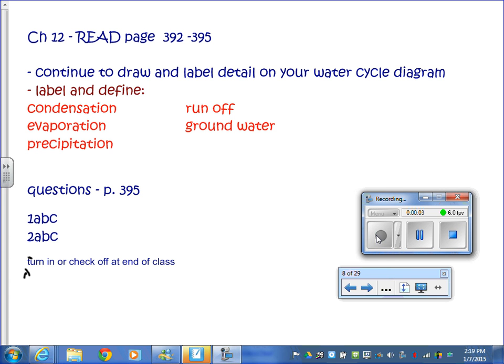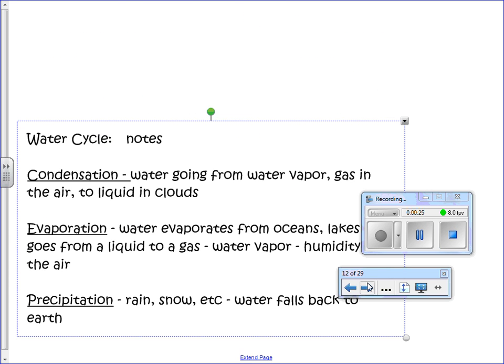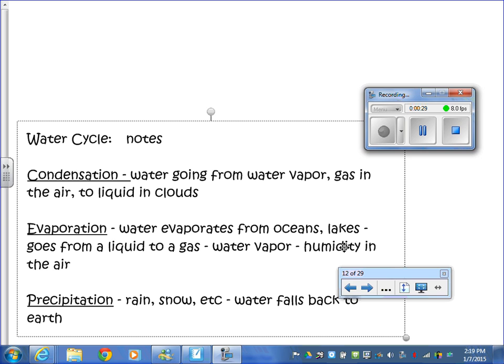This week we are doing chapter 12 on the water cycle and other water resources. The water cycle of course is review from elementary school, so just spend a short time on it, but it does lead us into other things about freshwater resources that we need. So yesterday you should have labeled and defined these things on your water cycle picture. So let's take a look and make sure you have the correct answers.